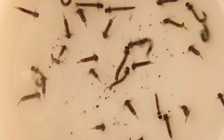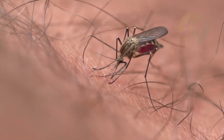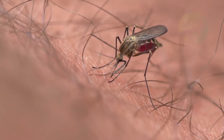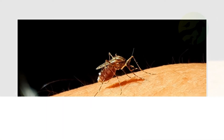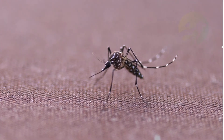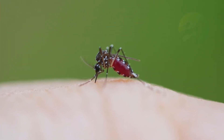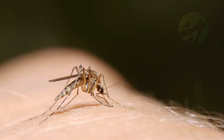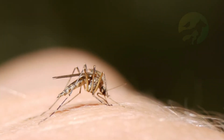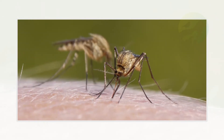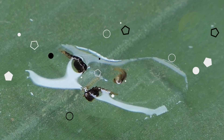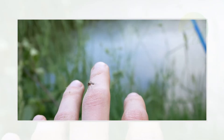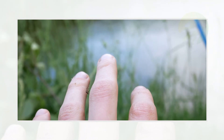Larvae eat microorganisms and organic matter in the water and can live there for 7 to 14 days depending on temperature. Pupae are lighter than water and float above the surface. The metamorphosis from larva to adult mosquito takes about two days. Pupae have no mouth and do not feed during this period, using energy reserves accumulated during the larval stage.